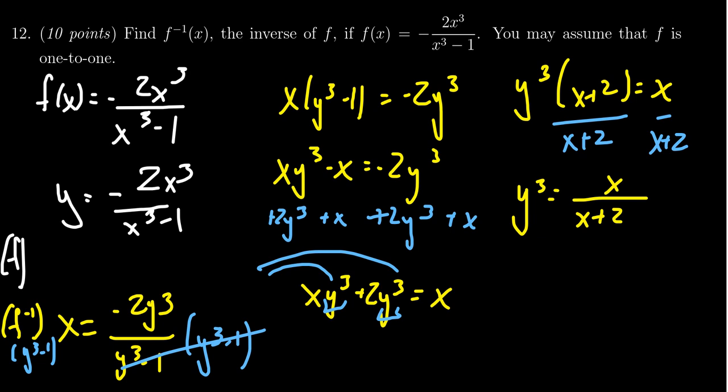And then the last thing to do is to take the cube root of both sides. We end up with y equals the cube root of x over x plus 2.